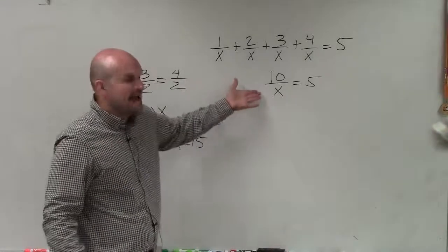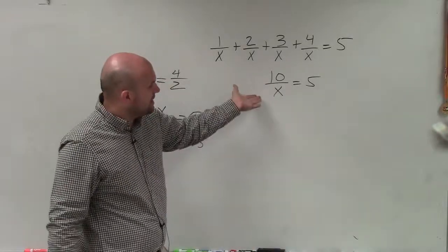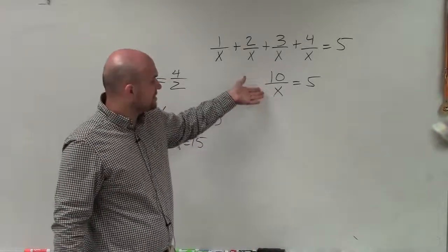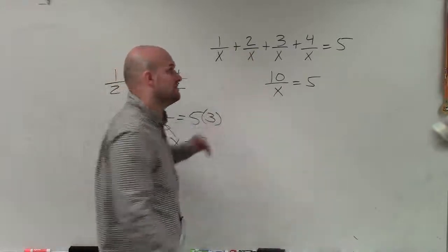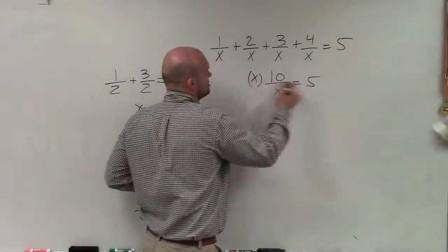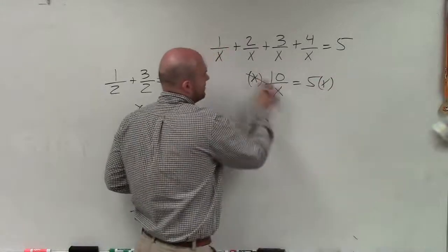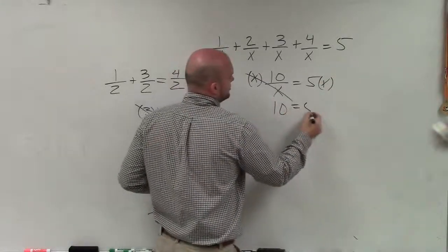Now in this case, again, I have to get the x off the bottom. The only way I can get the x off the bottom is to understand that my 10 is being divided by x. So to undo divided by x, I have to multiply by x. By multiplying, I get 10 equals 5x.